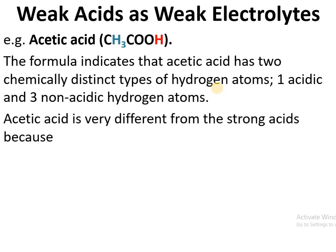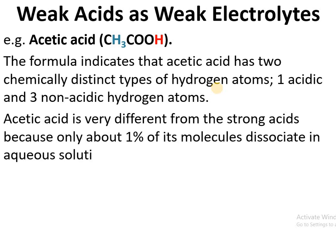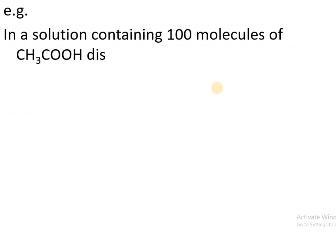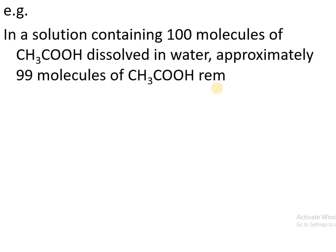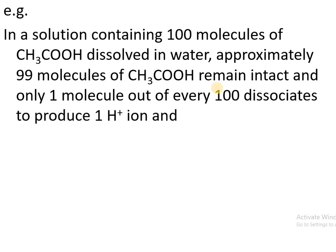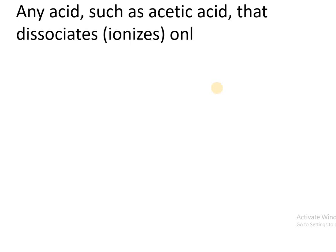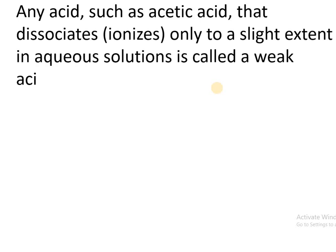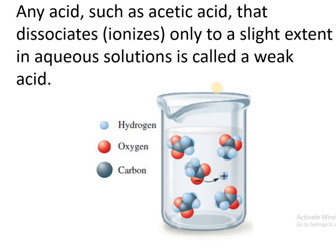Acetic acid is very different from strong acids because only about 1% of its molecules dissociate in aqueous solution at typical concentrations. In a solution containing 100 molecules of acetic acid, approximately 99 molecules remain intact and only 1 molecule dissociates to produce 1 H⁺ ion and 1 acetate ion. Any acid that dissociates only slightly in aqueous solution is called a weak acid.